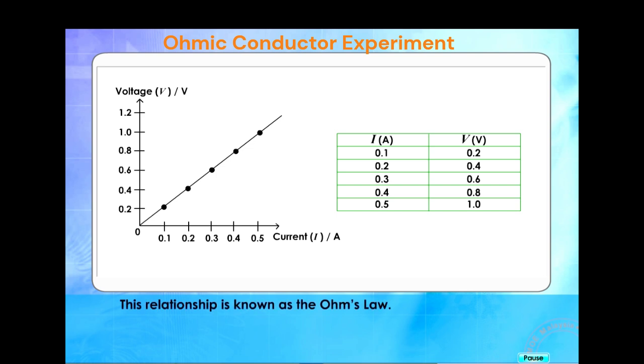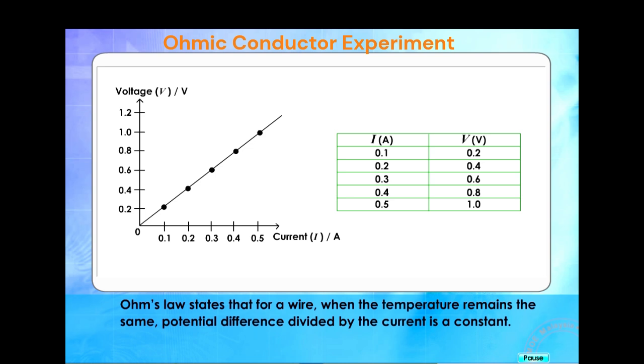This relationship is known as Ohm's law. Ohm's law states that for a wire, when the temperature remains the same, potential difference divided by the current is a constant.